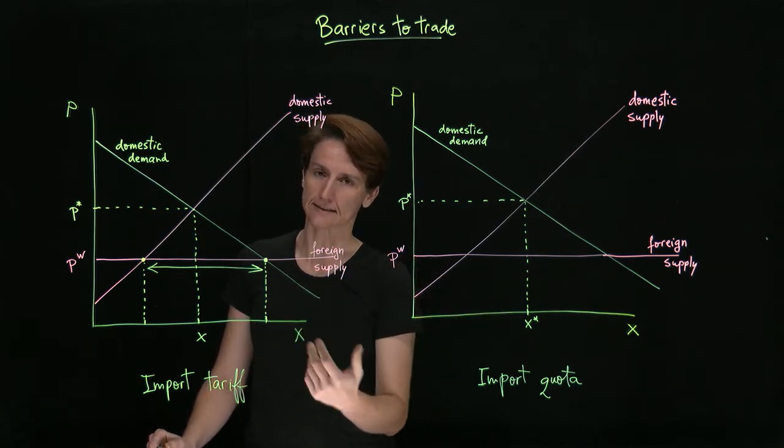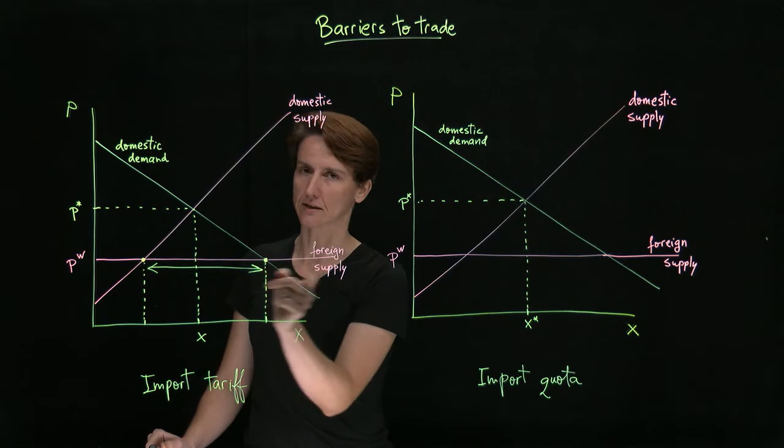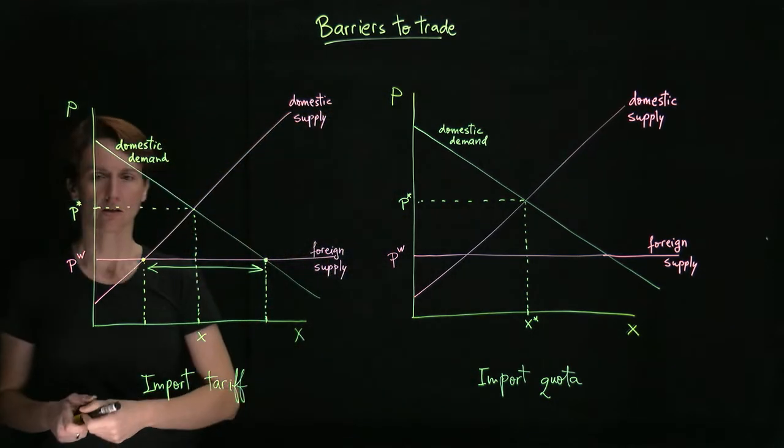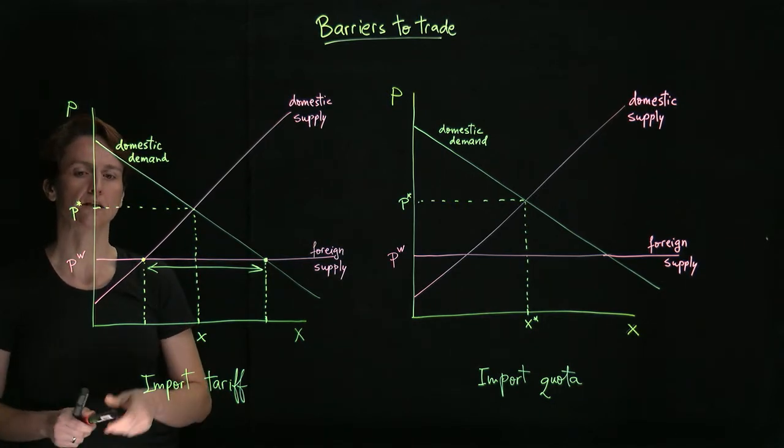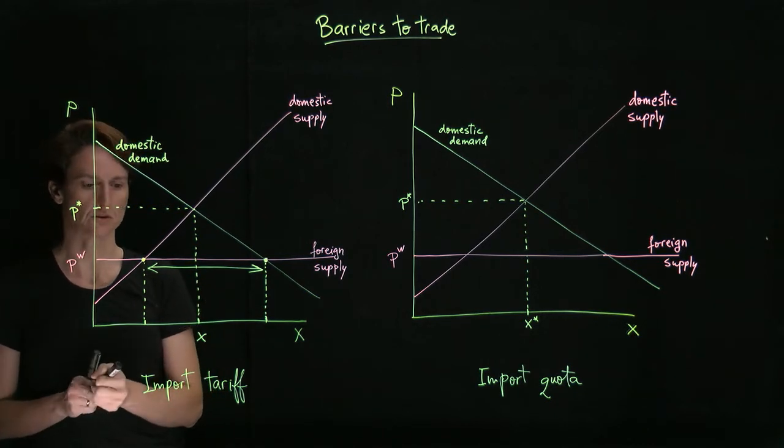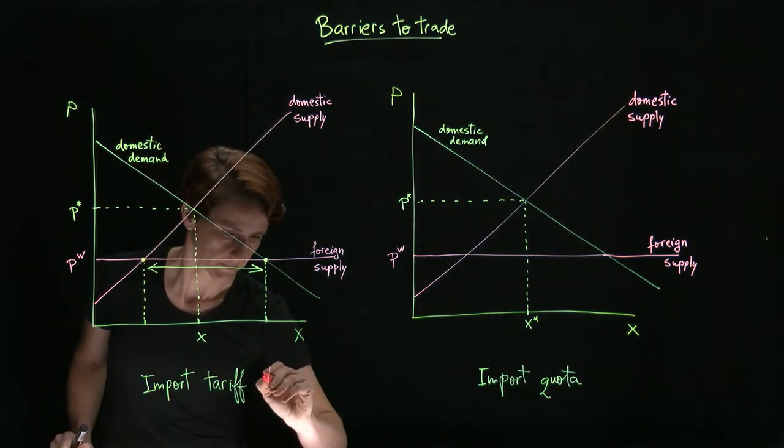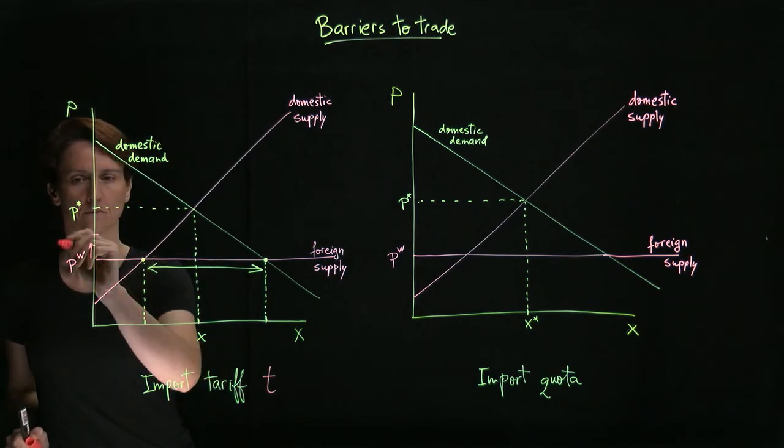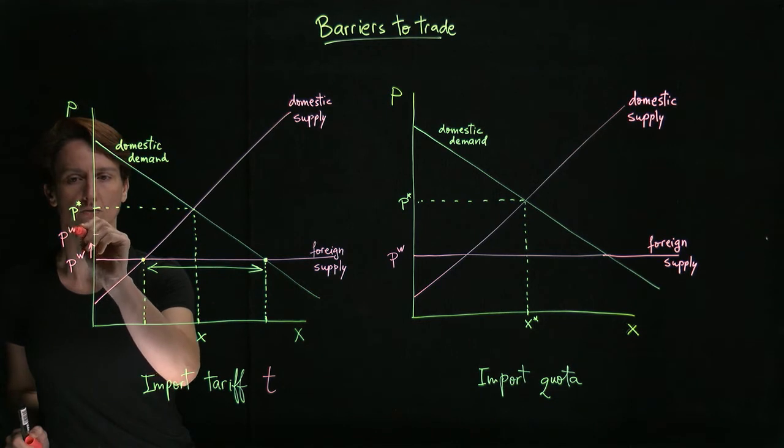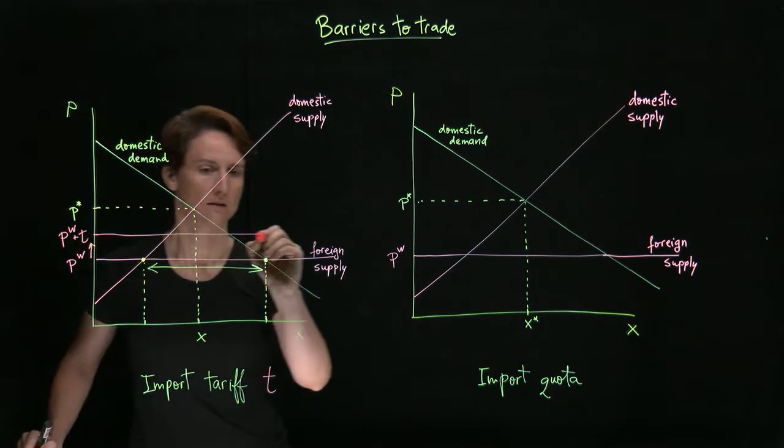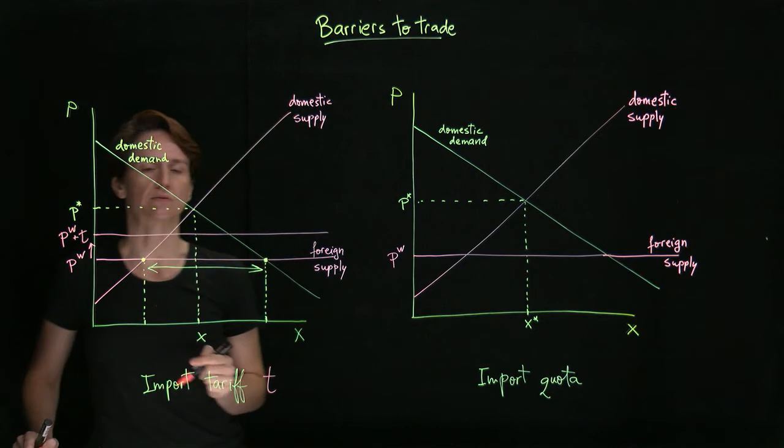A tariff is exactly the same, except that it only applies to the foreign supply. So a tariff T per unit will have the effect of increasing the price of foreign goods faced by domestic consumers by the amount T. So now domestic consumers will be able to buy foreign goods only at Pw plus T, and this will be the foreign supply from their perspective.